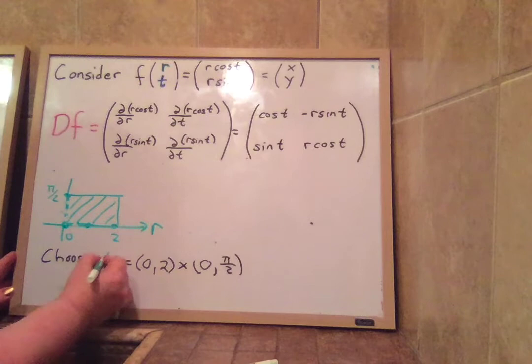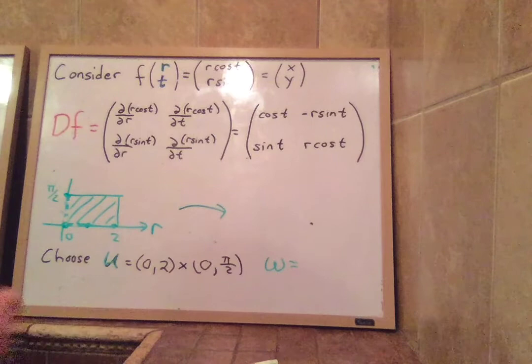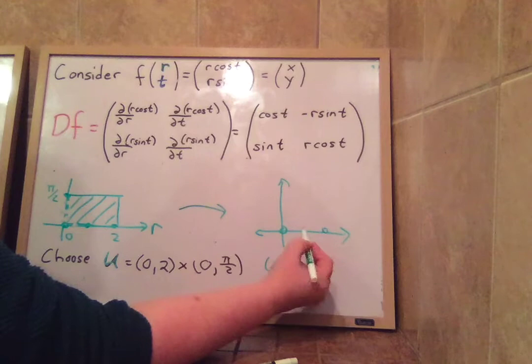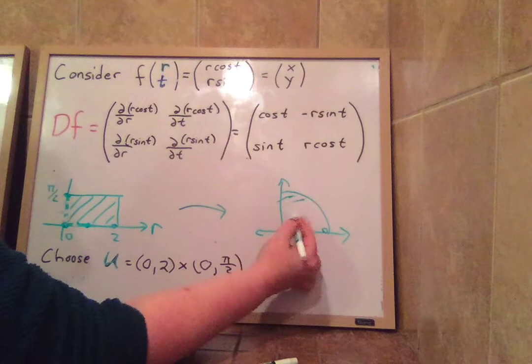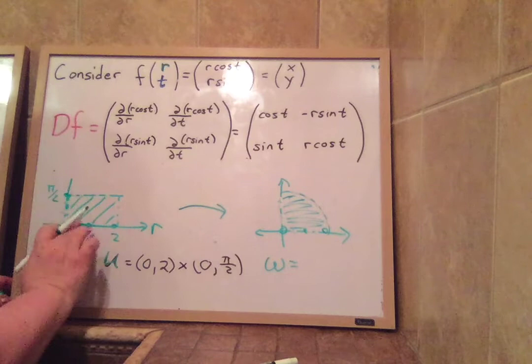And now we're mapping over to a set W. What does W look like? Well, the angles are going to be running from zero to π over two, and the radius is from zero to two. So radius goes from zero to two, and angles only go from zero to π over two. So it's this. This is the image set, not including this edge. These are open sets. I'm not including the edges. So there we are.